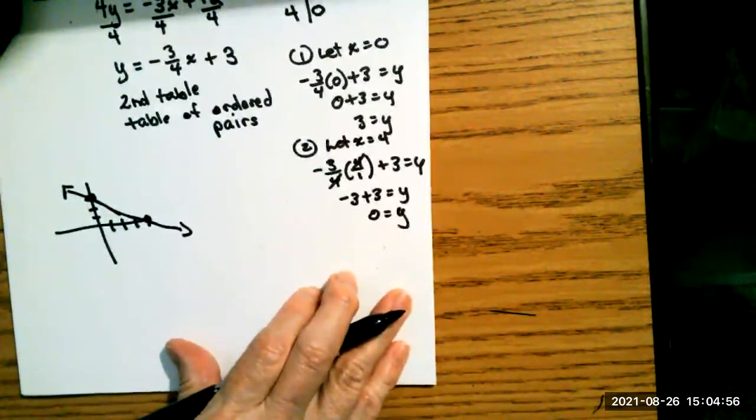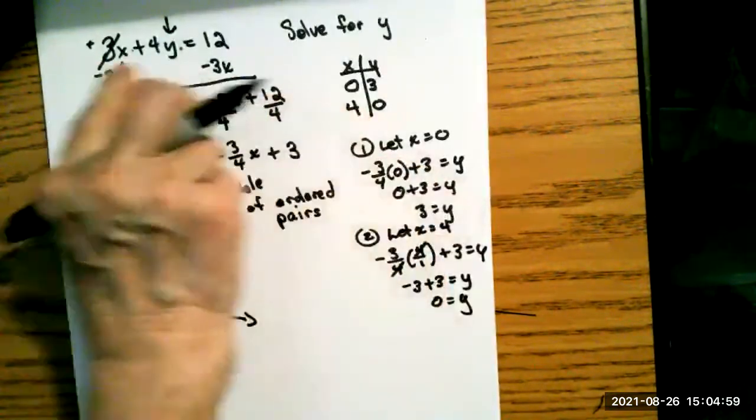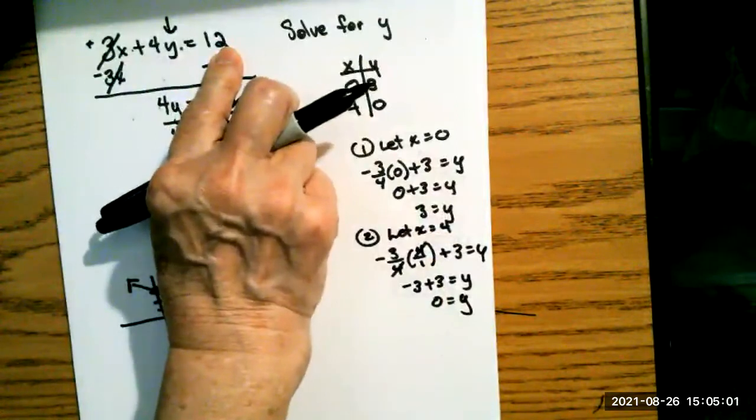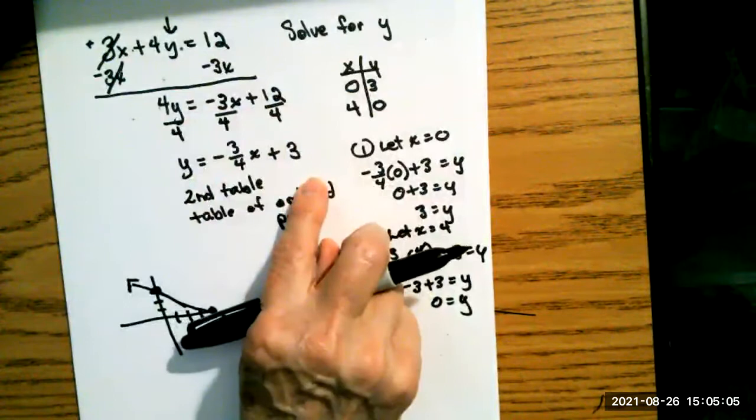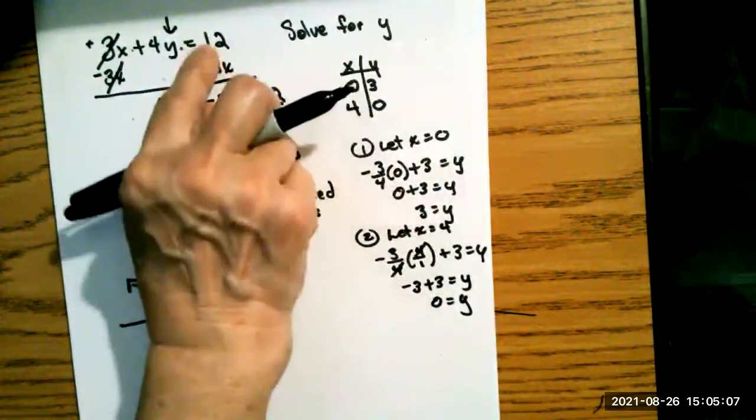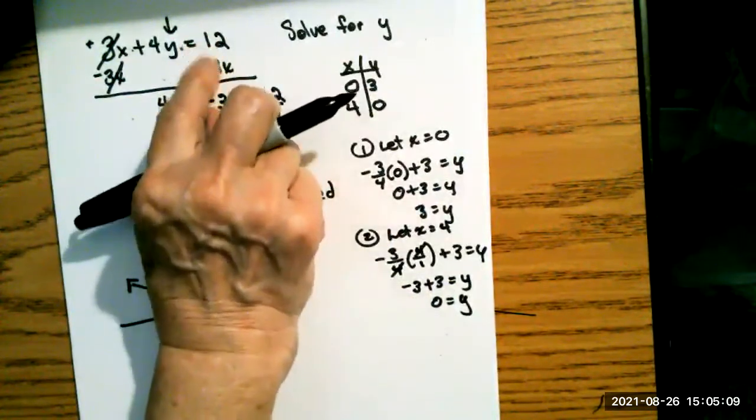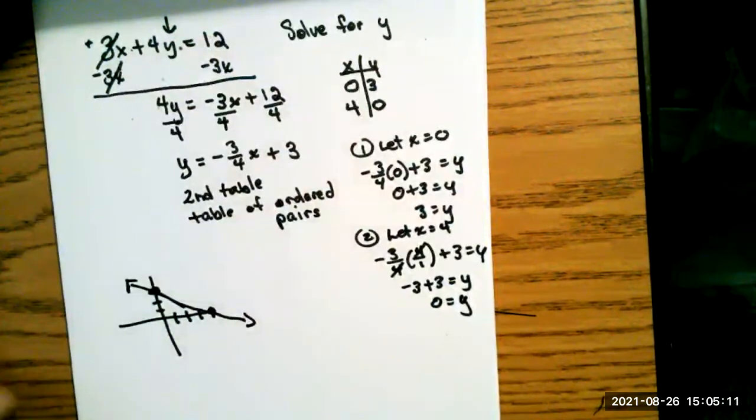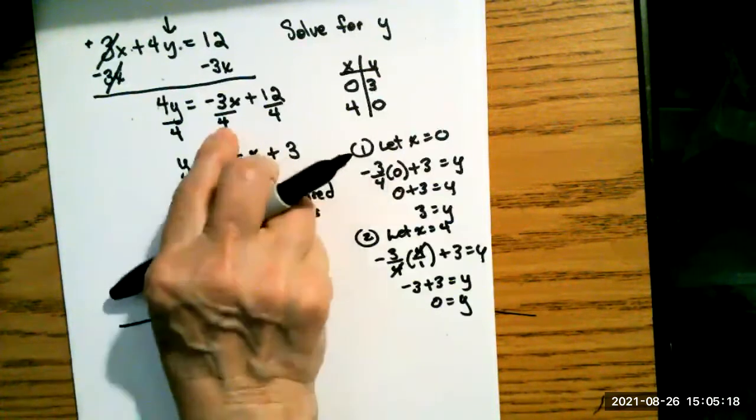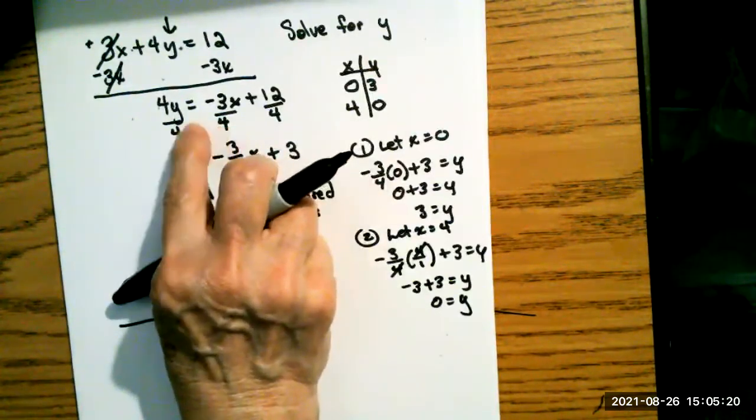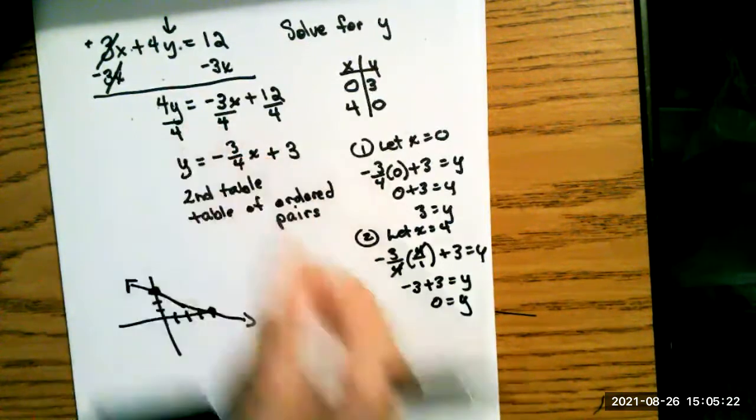So you can do that either of two ways. You can do this t-chart from here and pick values, or you can solve it for y, which is what we will do for most of the problems in our class. Just remember that you can't combine these two terms right here because 12 does not have an x. So I'll just have to write them down. And I usually write the term that has the x with it next to the equal sign.